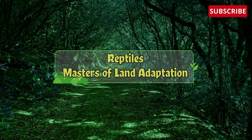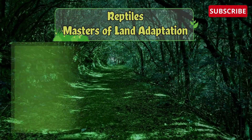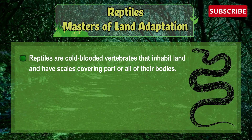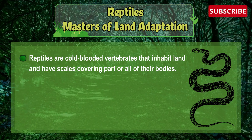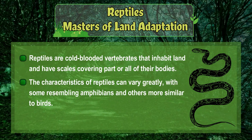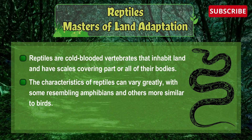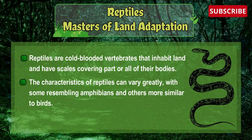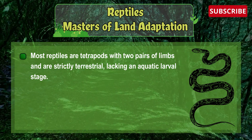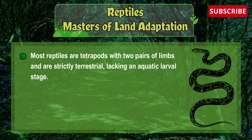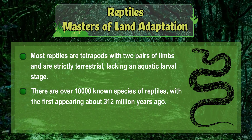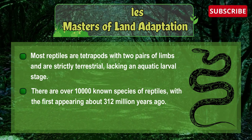Now let's learn about Reptiles — Masters of Land Adaptation. Reptiles are cold-blooded vertebrates that inhabit land and have scales covering part or all of their bodies. The characteristics of reptiles can vary greatly, with some resembling amphibians and others more similar to birds. Most reptiles are tetrapods with two pairs of limbs and are strictly terrestrial, lacking an aquatic larval stage. There are over 10,000 known species of reptiles, with the first appearing about 312 million years ago.